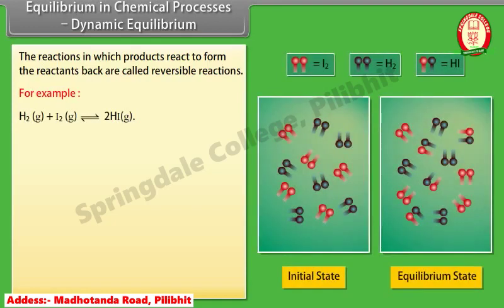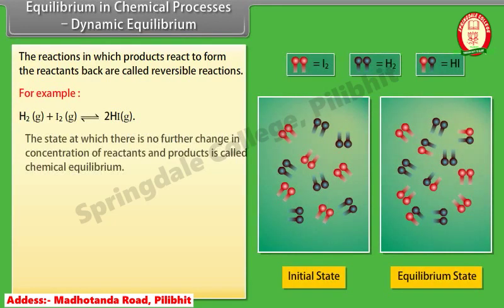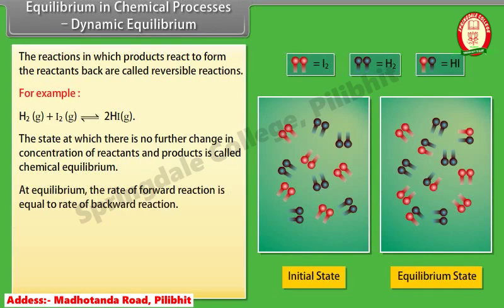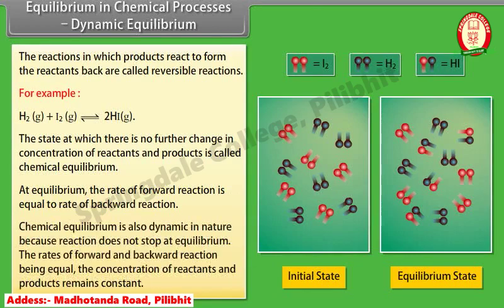For example, hydrogen reacts with iodine to give hydrogen iodide. The state at which there is no further change in concentration of reactants and products is called chemical equilibrium. At equilibrium, the rate of the forward reaction is equal to the rate of the backward reaction. Chemical equilibrium is also dynamic in nature because the reaction does not stop at equilibrium — the rates of forward and backward reactions being equal, the concentrations of reactants and products remain constant.